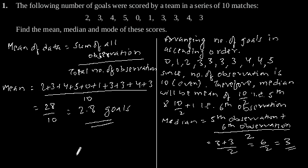Now, as we know, the mode of data is the observation with the maximum frequency. And from this data we can observe that the maximum frequency is of 3, that is 4 times.